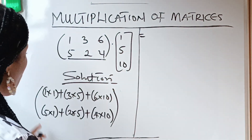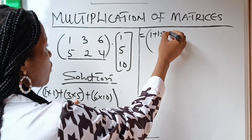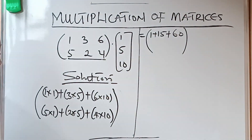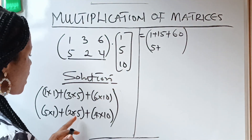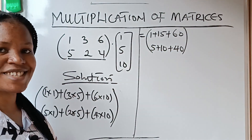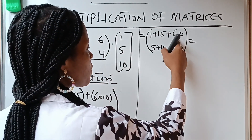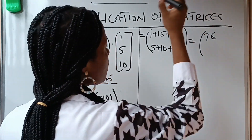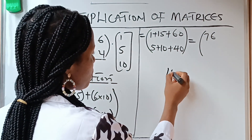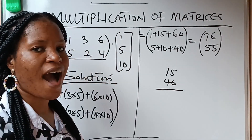This is equal to: 1 times 1 gives 1, plus 3 times 5 gives 15, plus 6 times 10 gives 60. Then 5 times 1 gives 5, plus 2 times 5 gives 10, plus 4 times 10 gives 40. So: 1 plus 15 gives 16, and 16 plus 60 gives 76. For the second: 5 plus 10 gives 15, and 15 plus 40 gives 55. So the answer is [76; 55].